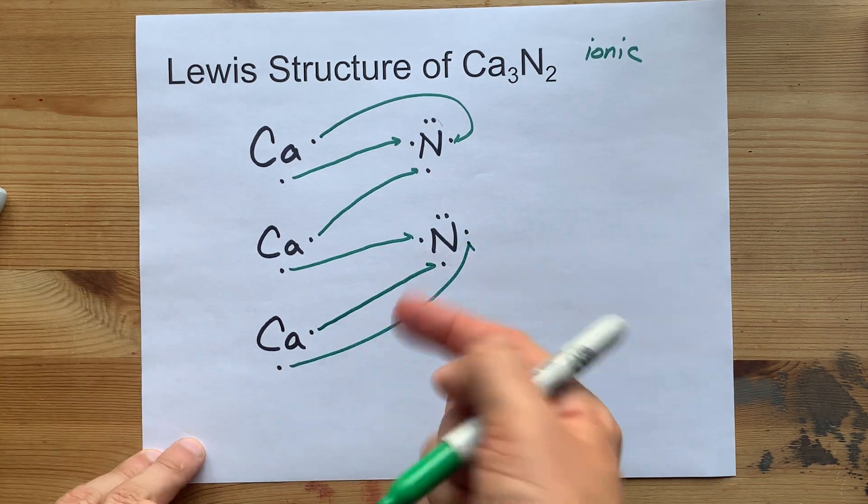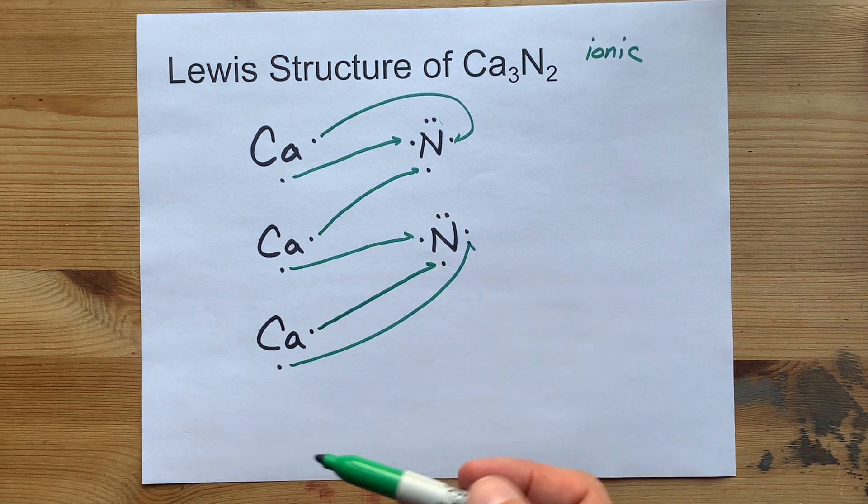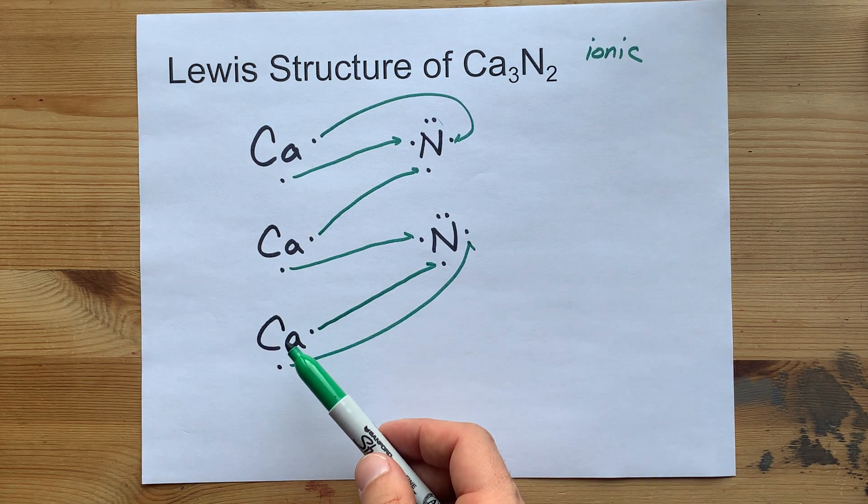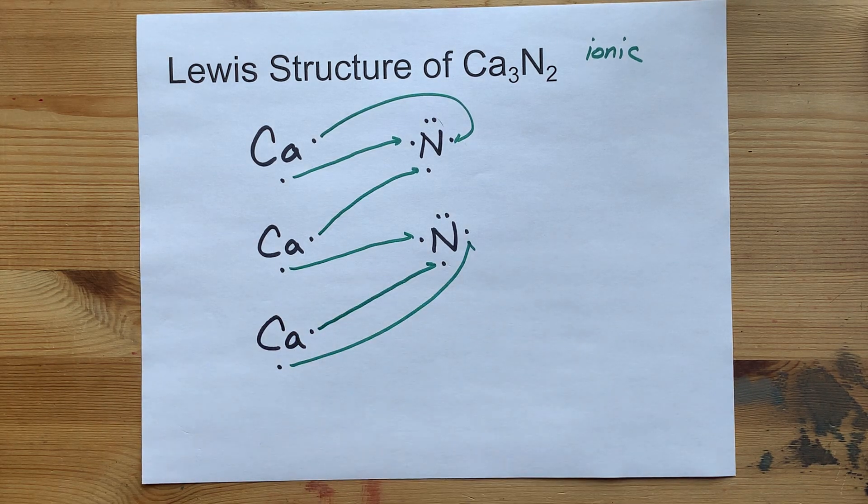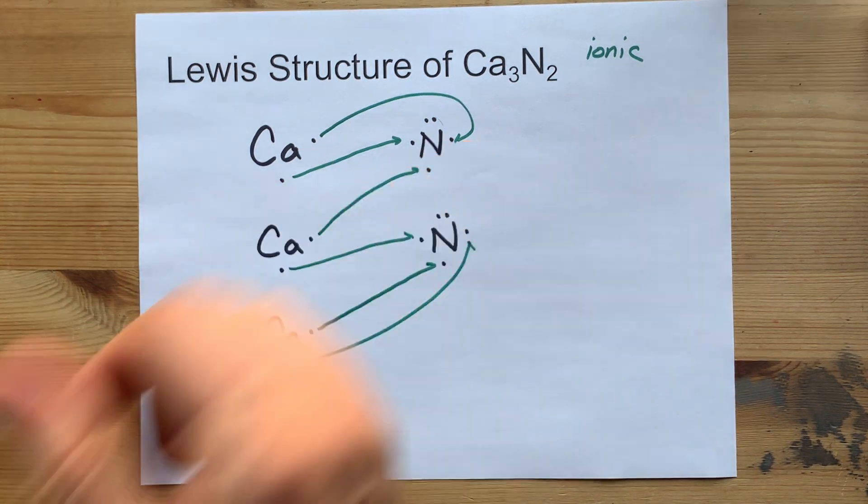This nitrogen will be happy with a complete octet or eight electrons around it. This calcium will be happy because it will have no electrons remaining. And we're finally ready to draw the final Lewis structure.